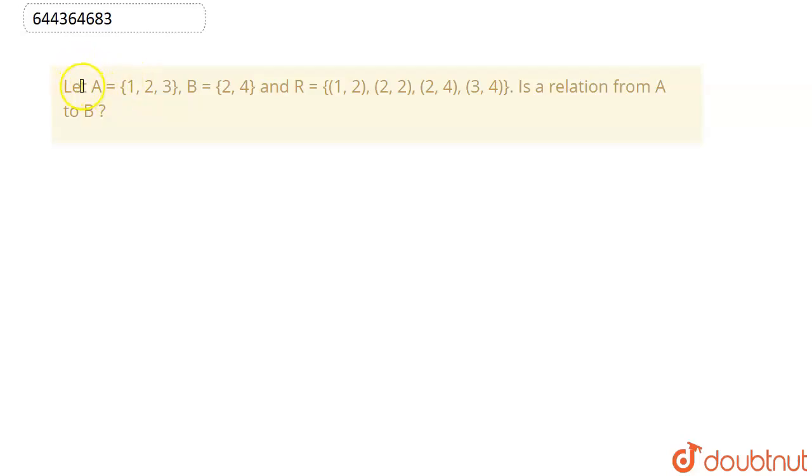We are given here the question that let set A equals to {1, 2, 3}, set B equals to {2, 4} and relation R equals to {(1,2), (2,2), (2,4), (3,4)} and we have to check whether this is a relation from set A to set B.